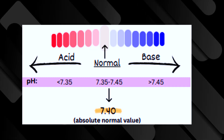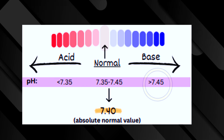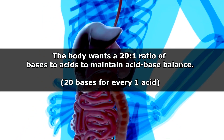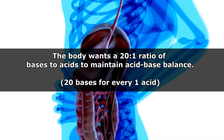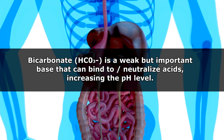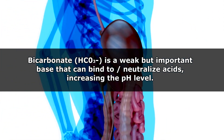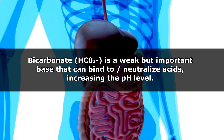Our body likes a narrow range for its blood pH — it wants it between 7.35 and 7.45. Anything less than 7.35 is too acidic; anything greater than 7.45 is too alkaline. The body is always trying to maintain a 20-to-1 ratio between bases and acids — it wants 20 bases for every acid. An important base in the body is bicarbonate, HCO3, which is a weak base that helps neutralize and bind to acids like hydrogen ions, and when it does this, it increases the pH level.